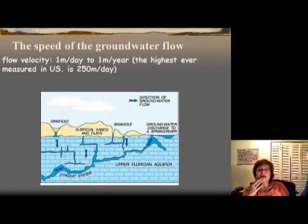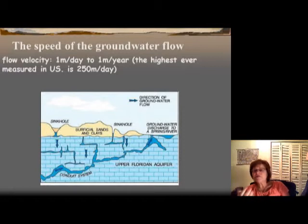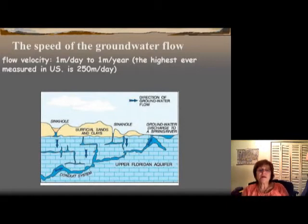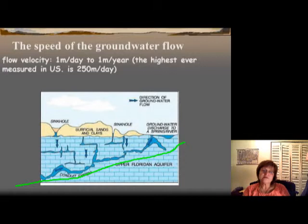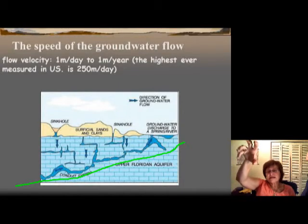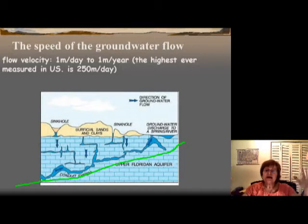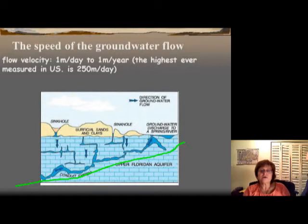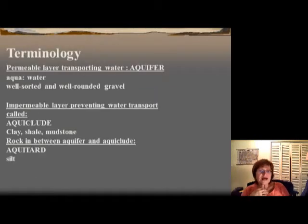The next question is how fast water actually moves in rocks. It can be one meter per day or as slow as one meter per year, but the highest ever measured is about 250 meters per day — almost as fast as a river. This happens in limestone, like the Florida aquifer. Florida is essentially all limestone, and water moves through underground rivers. If you put something bad in the water near Gainesville up north, it can reach the Everglades really quickly because the whole system is just interconnected caves with water flowing through them.